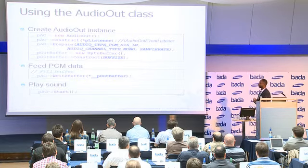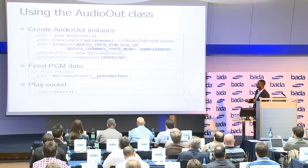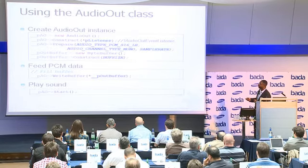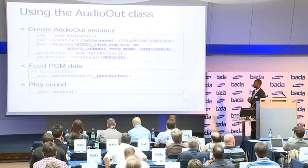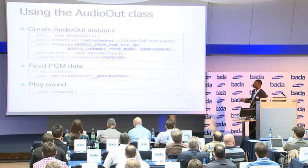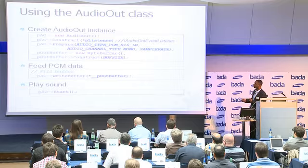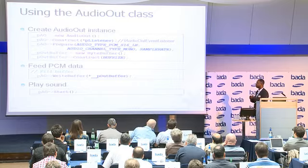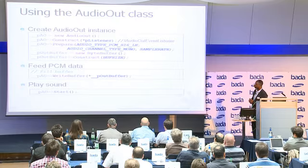So here we have an example of how we do this. We create an AudioOut instance, construct with the event listener, and we also do this additional preparation. Here we are playing back PCM signed 16-bit, mono single channel, and we also specify the sample rate. This is where we create the byte buffer which will contain the information to be played. We specify how big this byte buffer will be, and then data is written into that byte buffer, which we then feed to the AudioOut instance by calling the writeBuffer method.